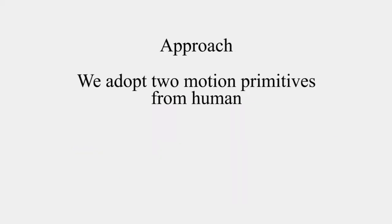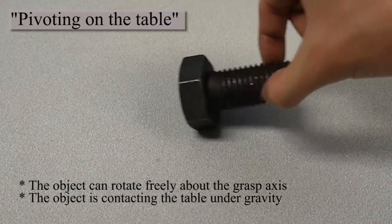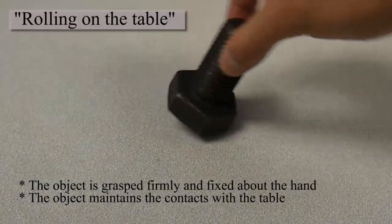To do this, we utilize two motion primitives commonly used by human. One is pivoting on the table. The other is rolling on the table.